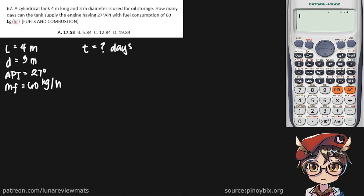So our first clue here is we're given our API, which we can use to find the density of our fuel. So let's first write down the API formula. We already have our API of 27 degrees, so we can find our specific gravity. Let's put that in our calculator.